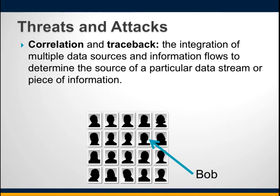Correlation and traceback attacks are similar to what was described with anonymity: integrating multiple data sources and information flows should not be able to determine the source of a protected piece of information.